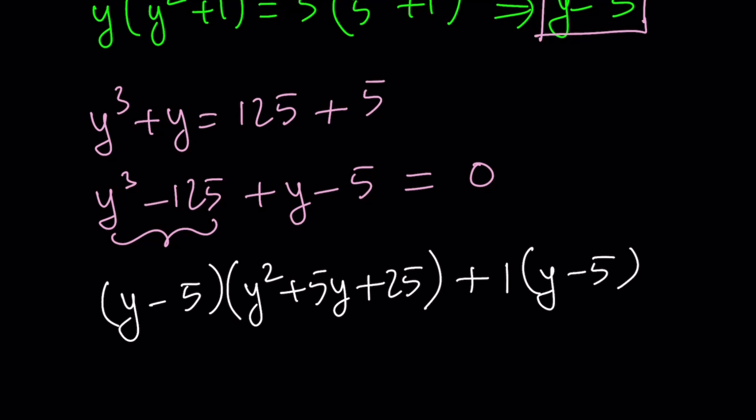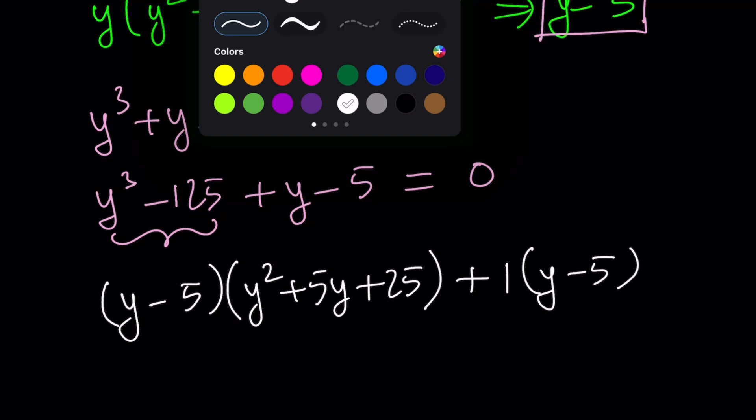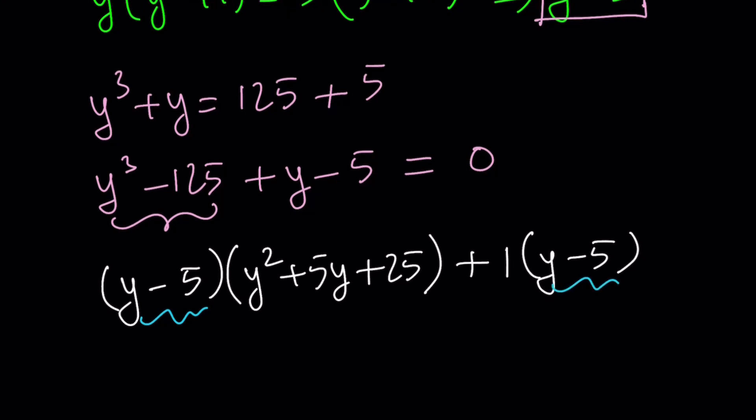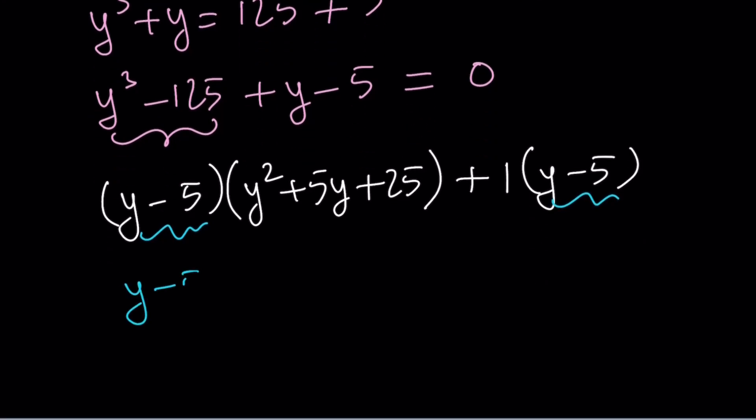And y minus 5 can be written as 1 times y minus 5. We just put the extra one there to make the factoring easier. So let's go ahead and take a look at this expression now. Y minus 5 is a common factor. So I can kind of take it out. Y minus 5. And then inside, we're going to have y squared plus 5y plus 25 plus 1, which is 26. And that concludes the factoring.